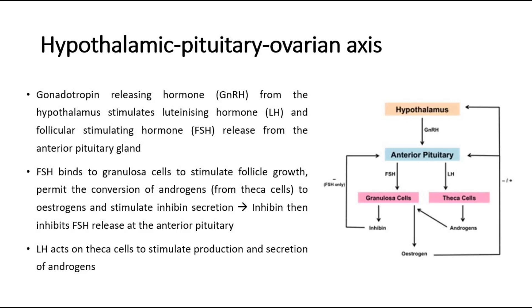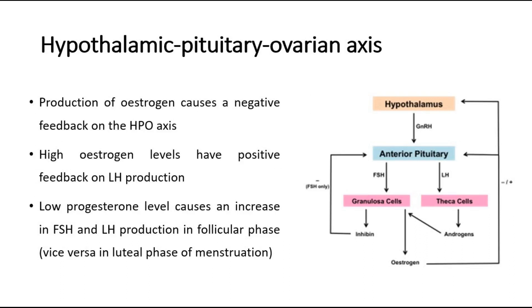The luteinizing hormone, LH, will act on the theca cells to stimulate the production and secretion of androgens. The production of oestrogen will cause a negative feedback on the HPO axis — low levels of oestrogen have an inhibitory effect on LH production, whereas high levels of oestrogen will increase LH production due to positive feedback. Unlike oestrogen, low levels of progesterone will have a positive feedback effect on pituitary LH and FSH secretion.